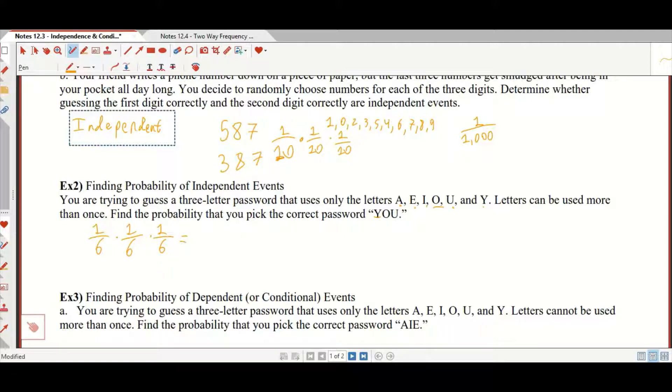So if you do 1 over 6, let's just multiply straight across. 1 times 1 times 1, that's 1. And 6 times 6 times 6 is 216. So there's a 1 in 216 chance that you get this correct,